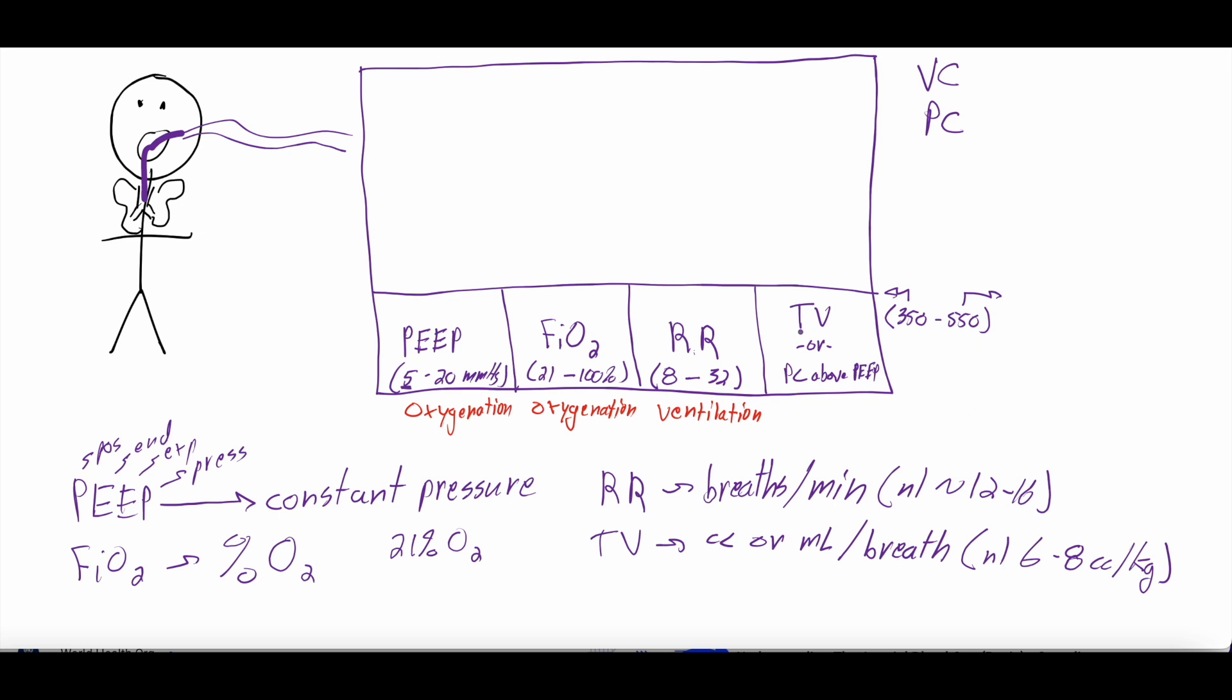And you set the tidal volume only when you're in volume control. And we've talked about this a number of times. So the two main types of, or two main modes of ventilation are volume control and pressure control. In volume control, you're setting a tidal volume.